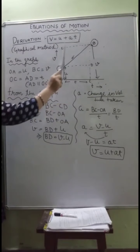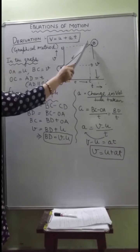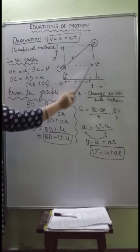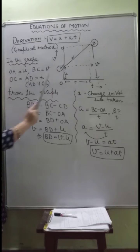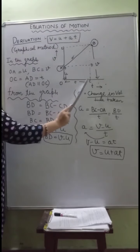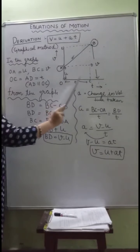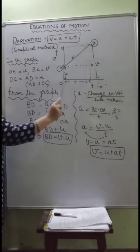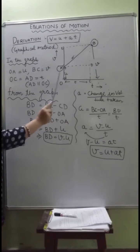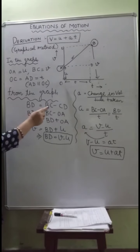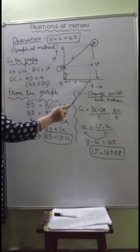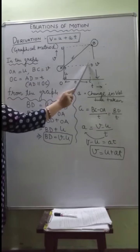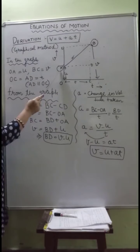We have drawn dotted lines — AD is drawn parallel to OC, and BC and BE are drawn perpendicular. We will be using them in solving the equations. Since this angle is 90 degrees, AD and OC are parallel lines and OADC forms a rectangle. The length of opposite sides of a rectangle are equal, so OC and AD are equal. If OC equals t, then AD also equals t, where t is the time taken by the object to travel from A to B.